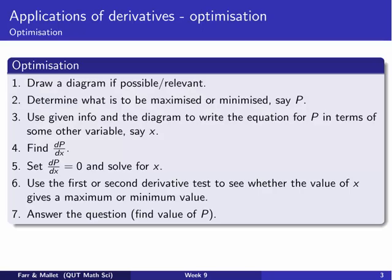One way to optimise things is given in this seven-point process. Sometimes it's useful to draw a diagram — if it's not, don't worry about it — but sometimes it will be. In the examples later in this video we'll draw some diagrams to set up our problems.